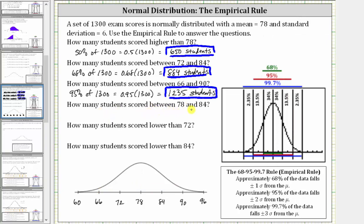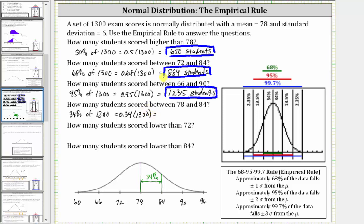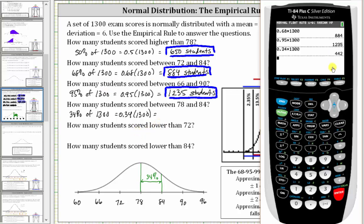Next, how many students scored between 78 and 84? Well, 78 is the mean and 84 is one standard deviation above the mean. Due to the symmetry of the bell curve, 34% of the data falls between the mean and one standard deviation above the mean, and 34% also falls between the mean and one standard deviation below the mean. So 34% of the students scored between 78 and 84 — that is 0.34 times 1,300, which is 442 students.